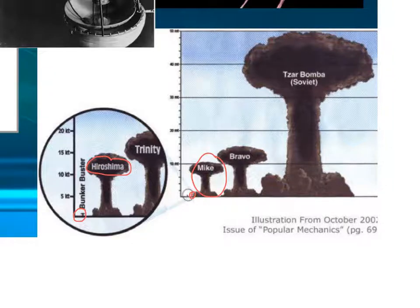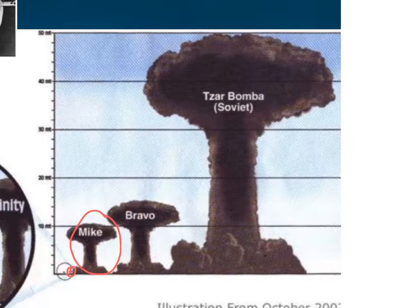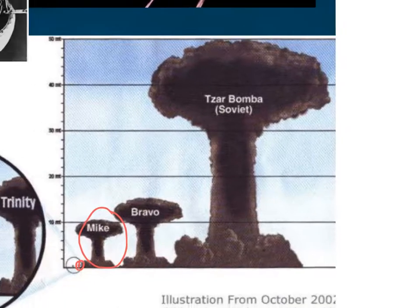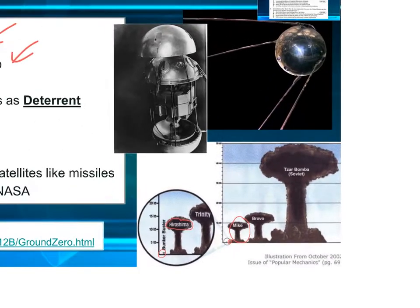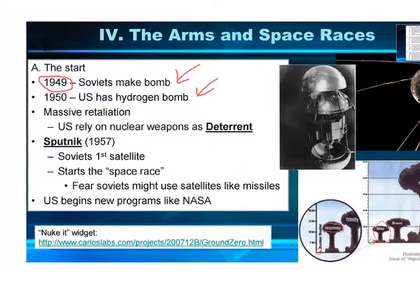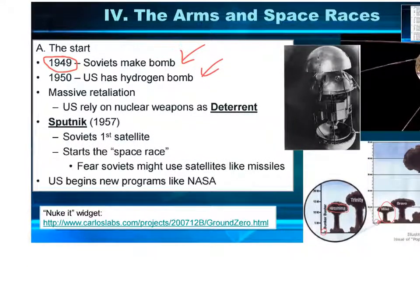This is the arms race. The idea behind both sides was: if they have nuclear weapons, we need to have a bigger one, or more of them, or better ones. It would be a deterrent — they won't launch against us in fear that we'll launch back. So we just kept getting more, adding fuel to the fire. In 1957, the Soviets launch the first satellite ever — Sputnik, about the size of a basketball, sending a radio beacon back to Russia as it orbits the Earth. That starts the space race.